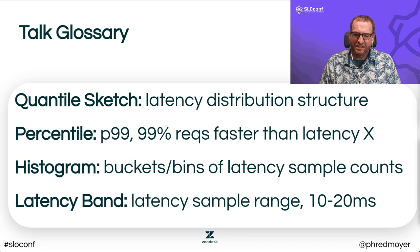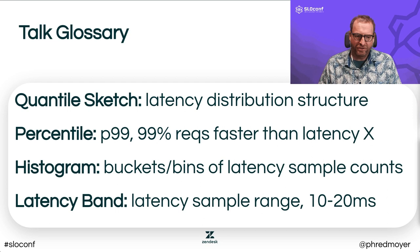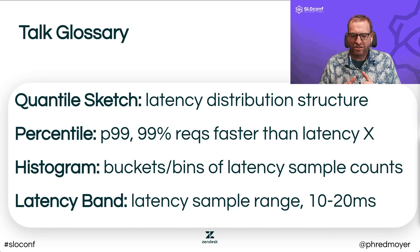Talk glossary. A quantile sketch is essentially an approximate histogram in the form of a latency distribution structure. Percentiles — everyone knows P99 — means 99% of your requests will be faster than some latency. A histogram is similar to a quantile sketch but it's not an approximation. It's where you keep an exact count of your latency samples in what are called bins or buckets — essentially a range like 0 to 10 milliseconds.